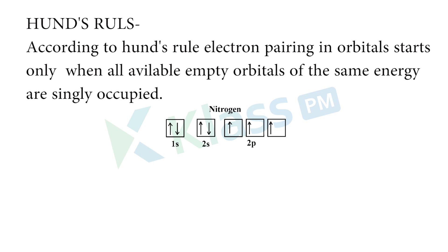It means that first all electrons will be occupied singly, and then only it will pair. When sufficient space is there, one electron will occupy one part of that shell, and the next electron will occupy the same. So after filling all shells singly, then only it will come back and pair the electrons. That is Hund's rule.